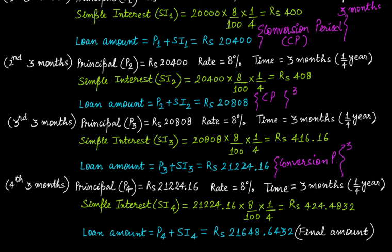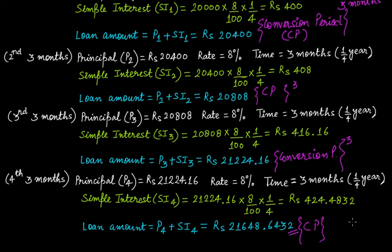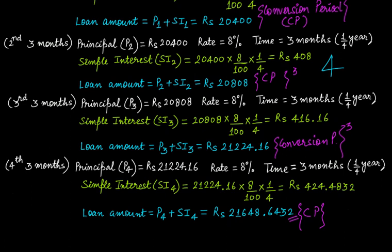After the fourth period of three months you reach the end of one year — and adding interest to the previous principal to get a new principal is again a conversion period. So for quarterly compounding, in one year there are four conversion periods: first, second, third, and fourth — each occurring after three months.